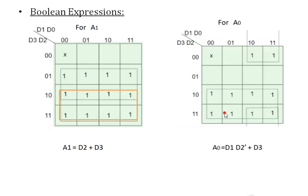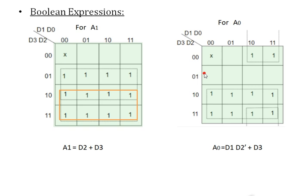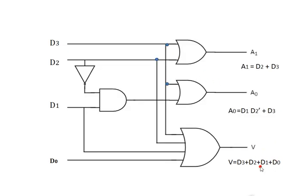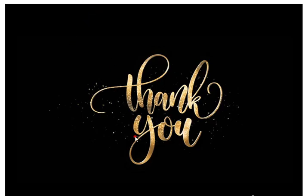V is valid for all active input cases, so V = D0 + D1 + D2 + D3, representing valid output conditions. This is the complete priority encoder. Thank you — in the next class we will deal with decoders, which perform the exact opposite operation of encoders. The PDFs related to these lectures are mentioned below.